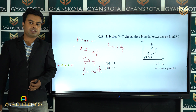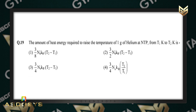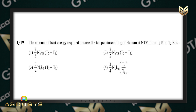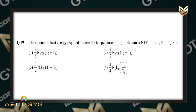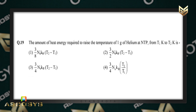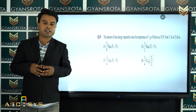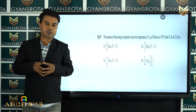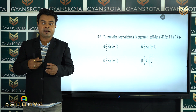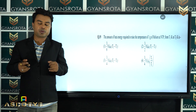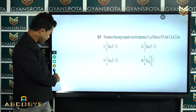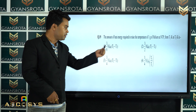Question 19: the amount of heat energy required to raise the temperature of one gram of helium at NTP from T1 kelvin to T2 kelvin. This is a straightforward application from the chapter on specific heat capacity. Option number 1 is the correct answer.